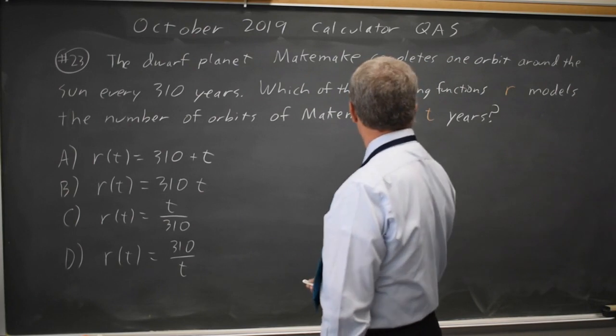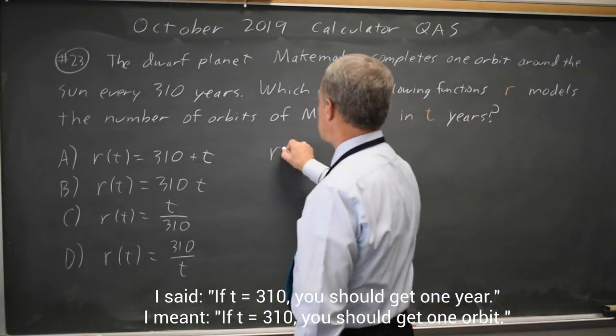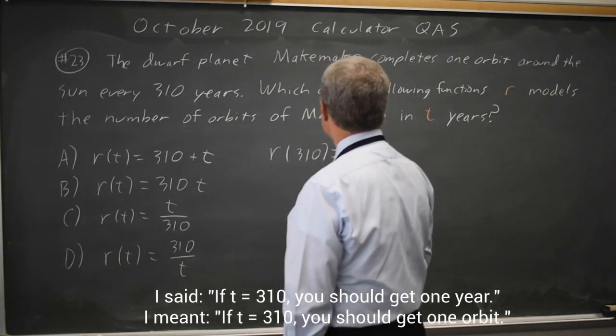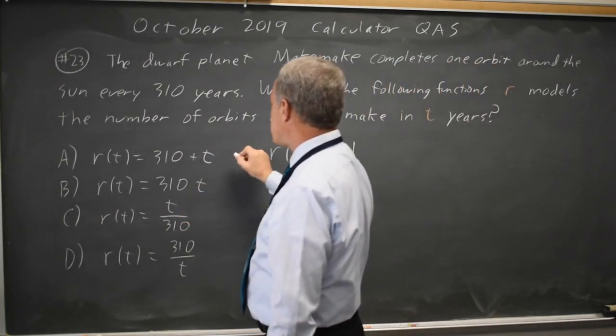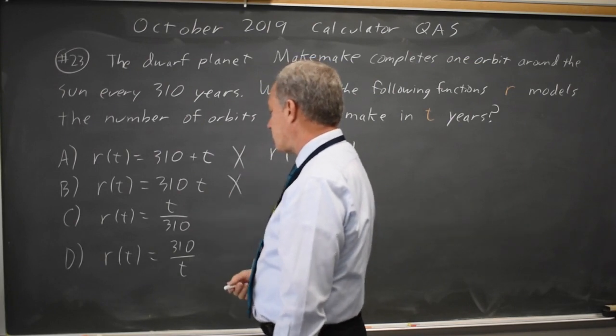If T equals 310, you should get one orbit, because in 310 years you complete one orbit. Choice A would give you 310 plus C, which is clearly wrong. Choice B would give you an even larger number, which is also clearly wrong.